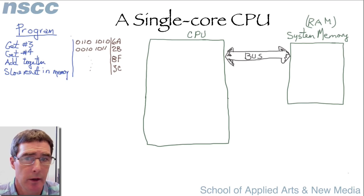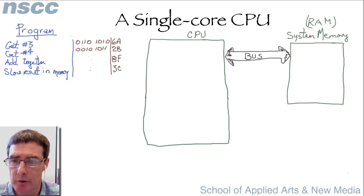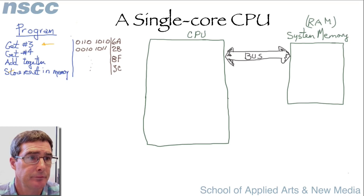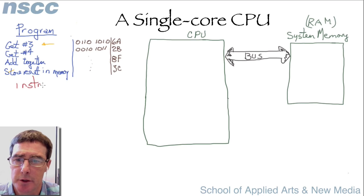So we're first going to look at a simple program. Let's suppose we have a simple four-step program that gets a number three, gets a number four, adds those numbers together, and stores the results in memory. Every program, every step of a program is converted to what's called an instruction.